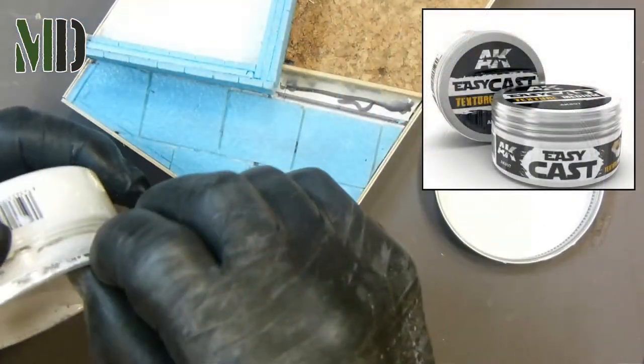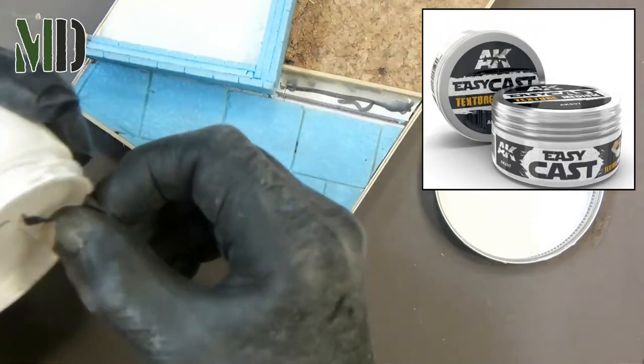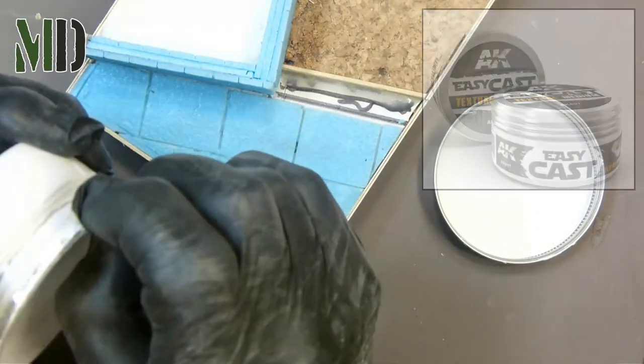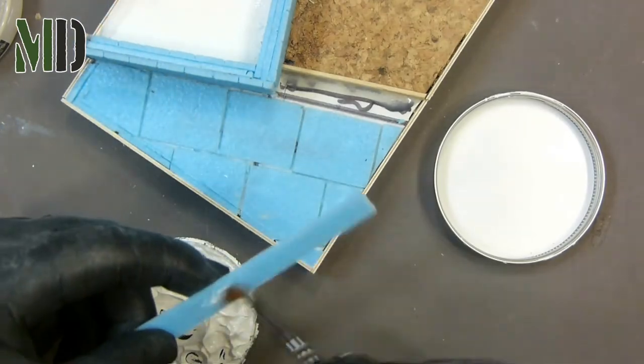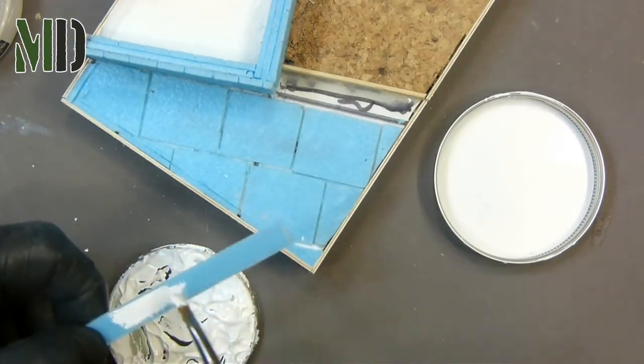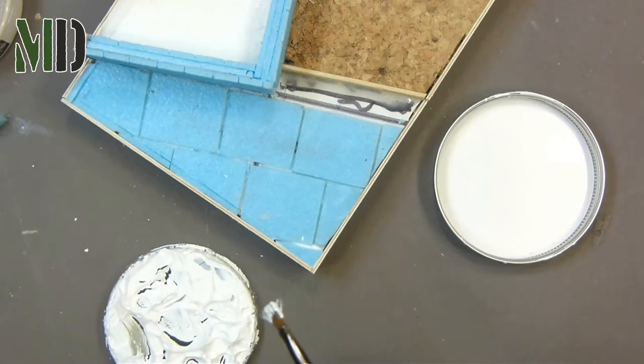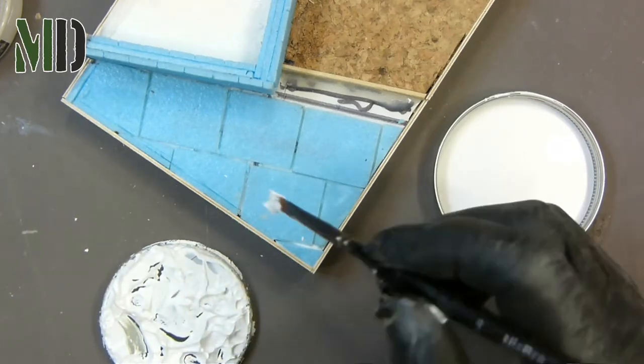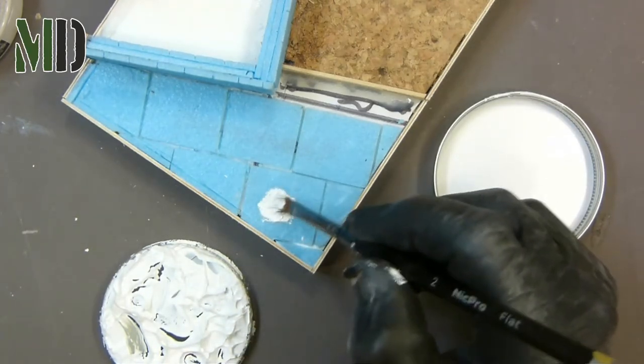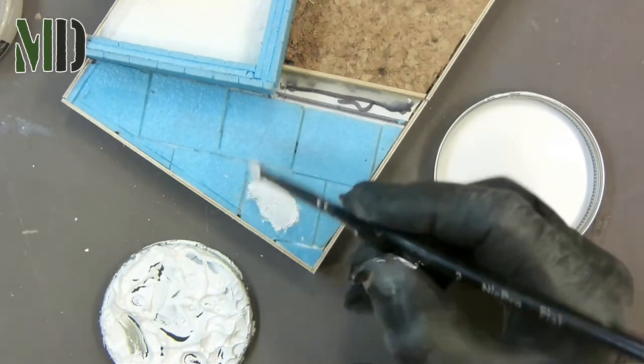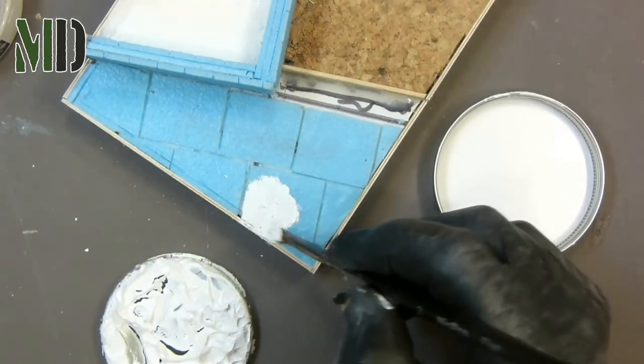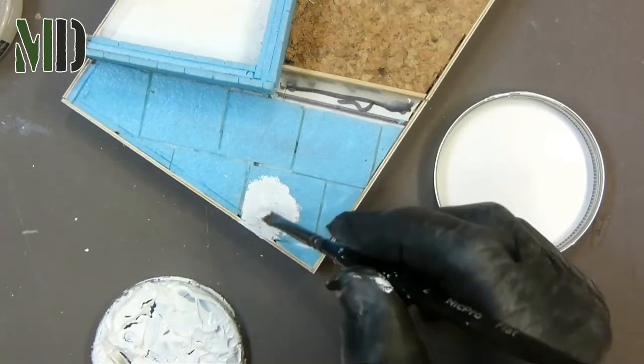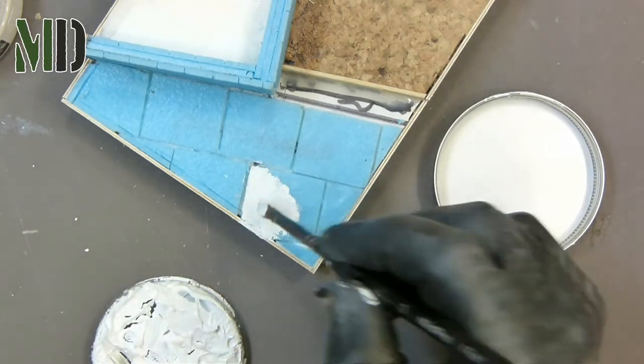For the concrete texture I'm using AK Interactive Texture Cast, which is a water-based paste, so I know that it won't eat the foam board. And I'll do this on the slabs and also on the concrete area that's been cast. After I put it down, I just clean the gaps out again with a toothpick. And once it's dry I'll give it a little sand down so it's not too textured, but it's quite a good product for cast texture on metal but also for concrete.